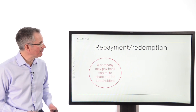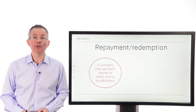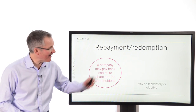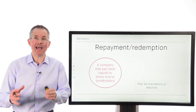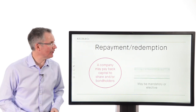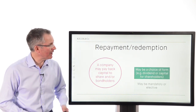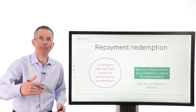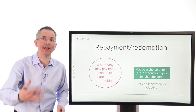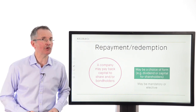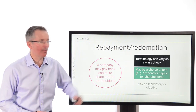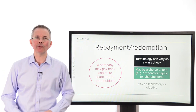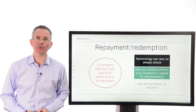Finally: repayments and redemptions. A company may pay back capital to bondholders and or shareholders. I've listed this as non-elective, but in certain situations it may be elective — meaning you may have to make a decision — because there could be a choice of how the company returns capital, for example through capital or through a dividend. If there's a choice, a decision may be required. The terminology can also vary, so watch out for different jargon in the letter you receive.